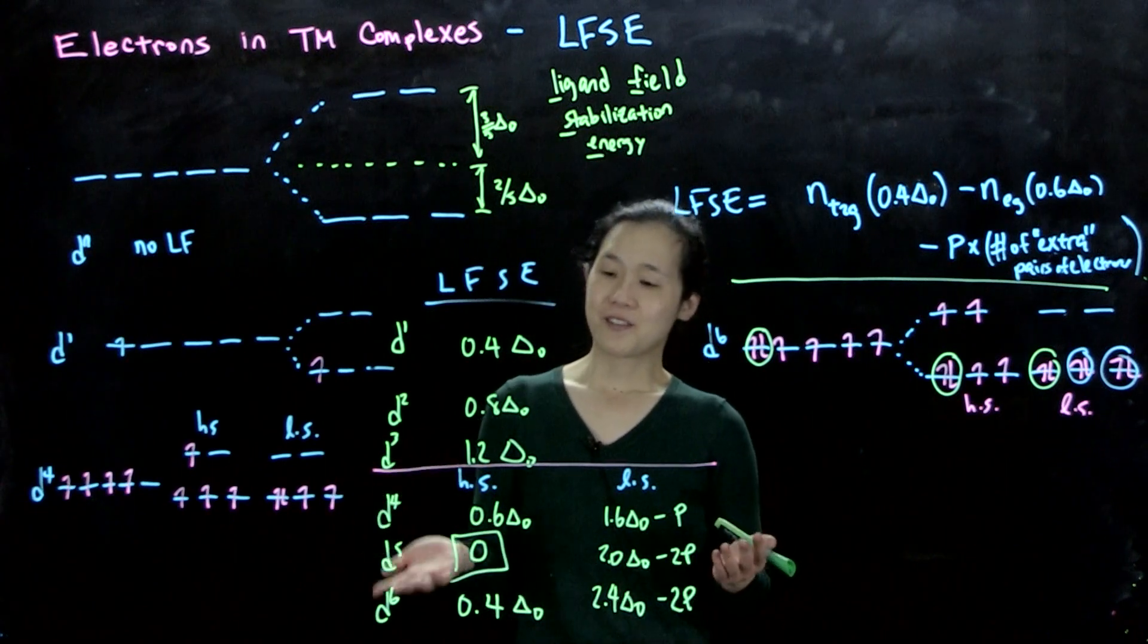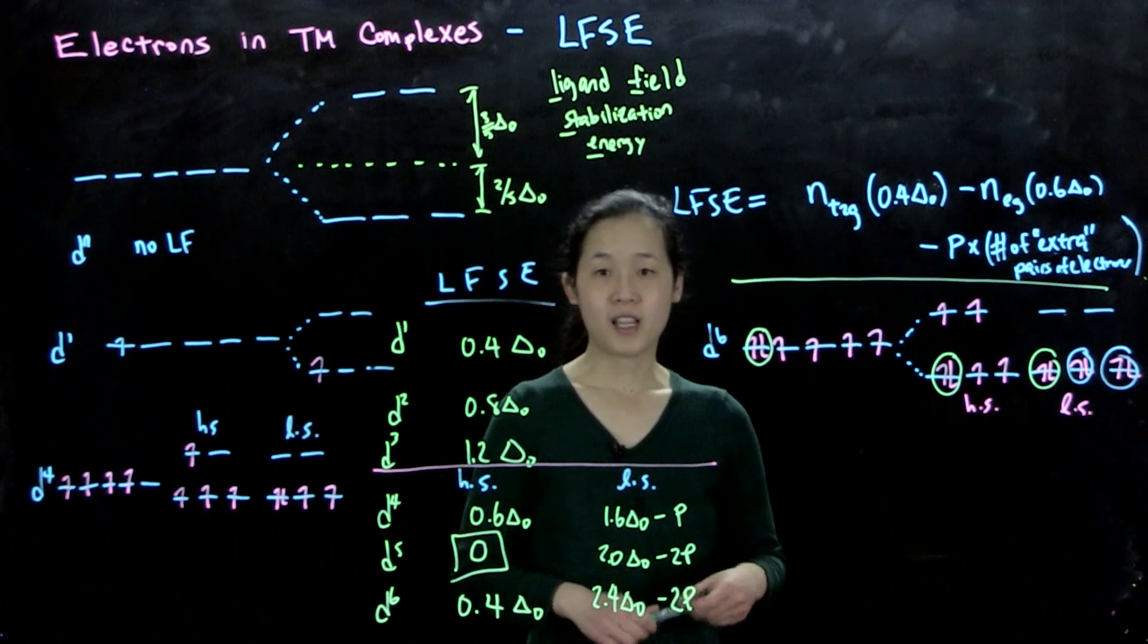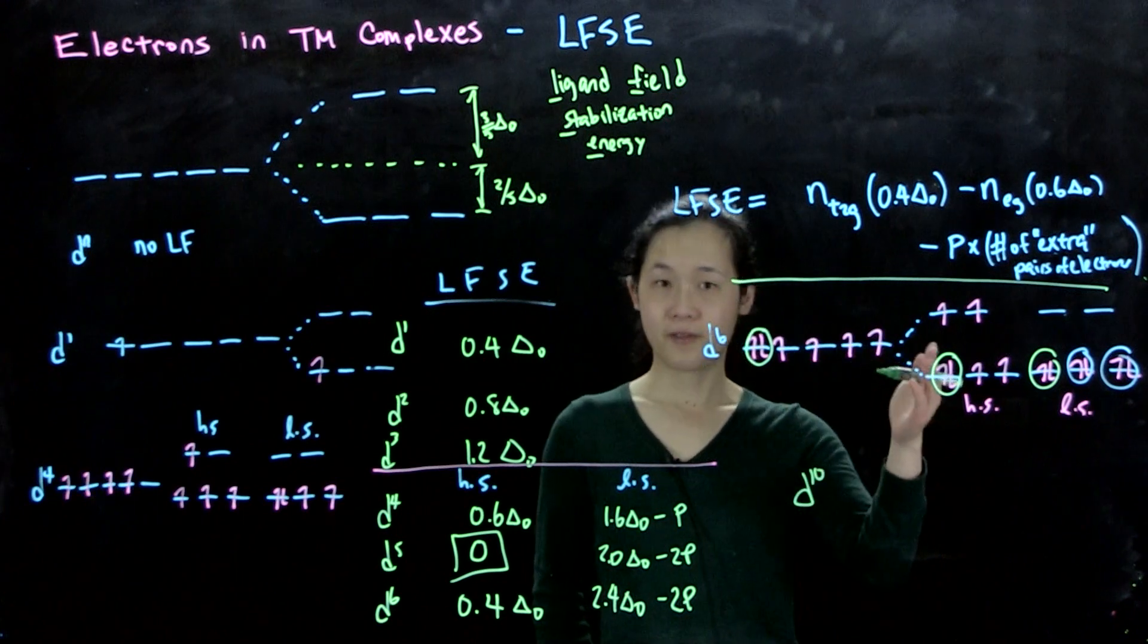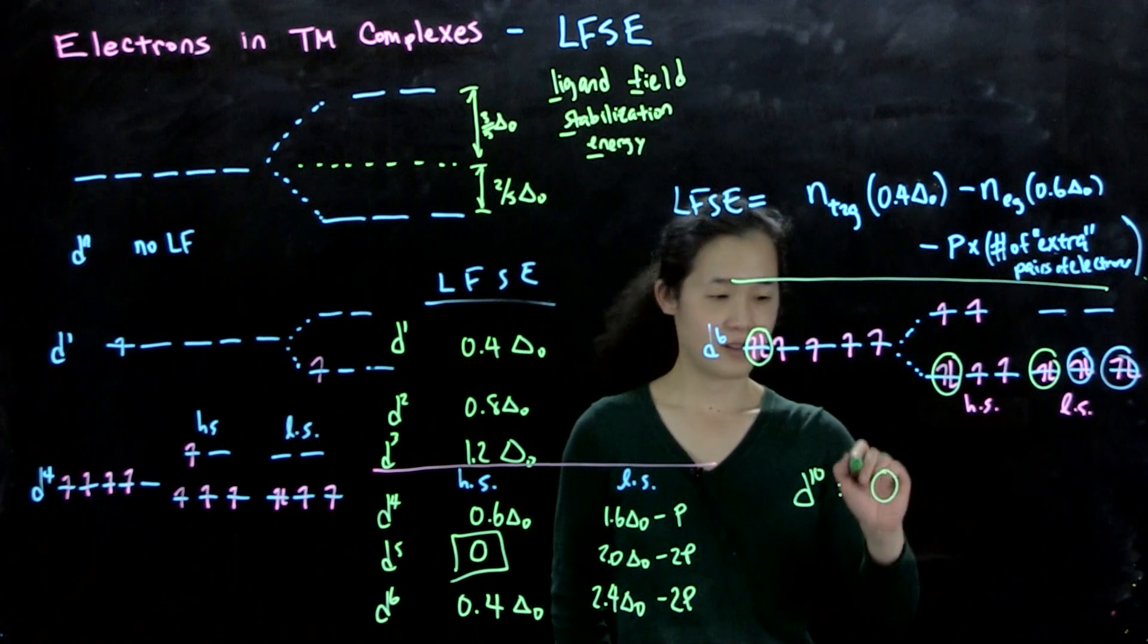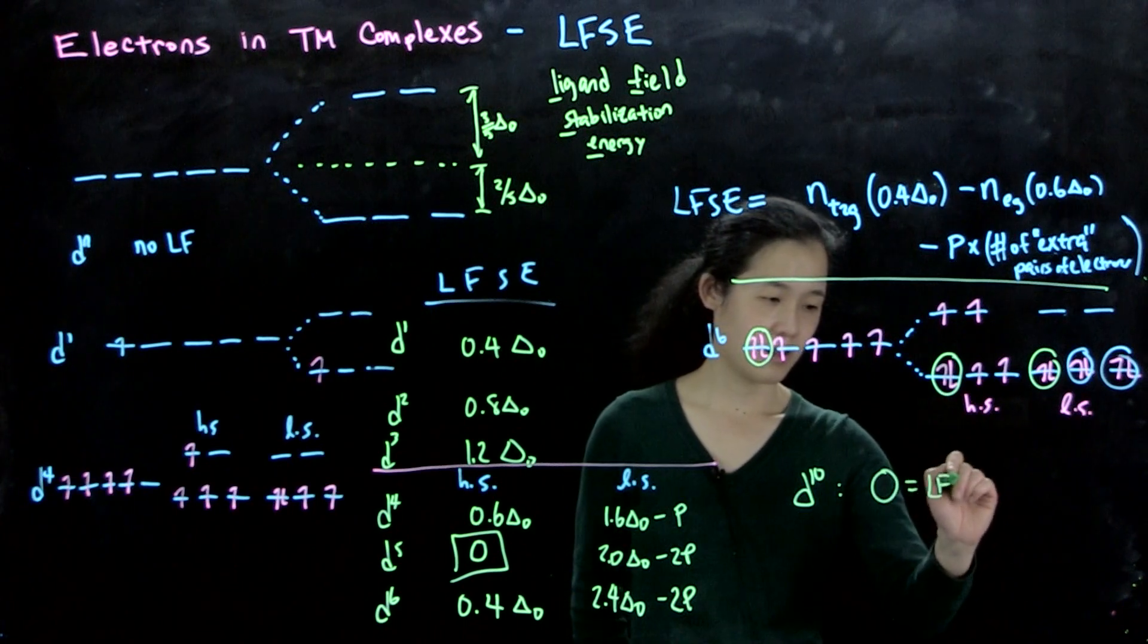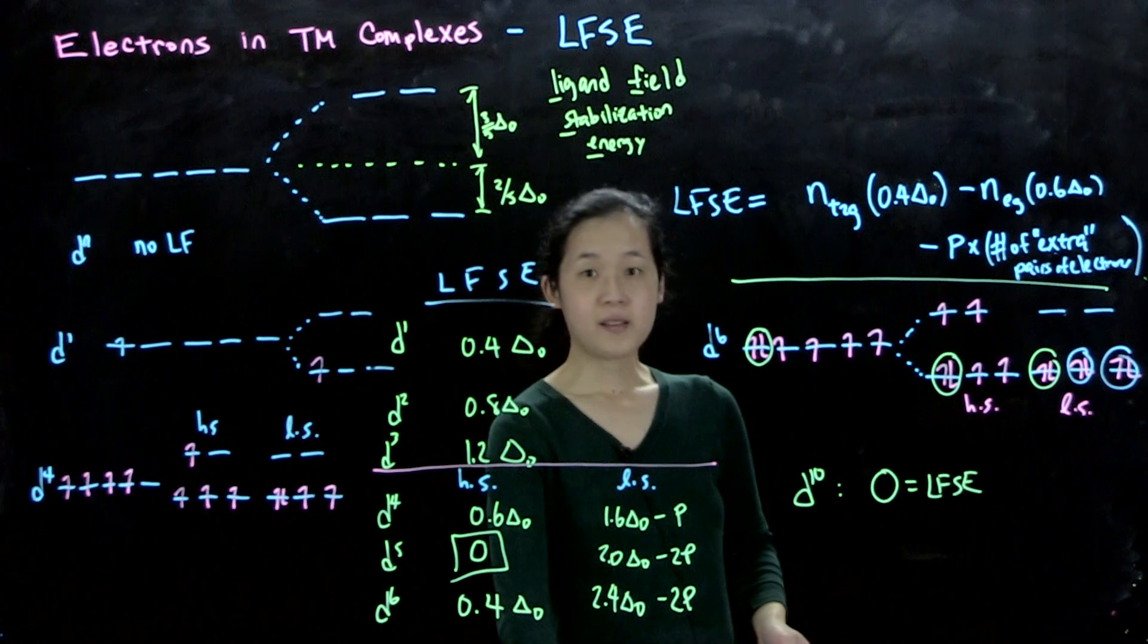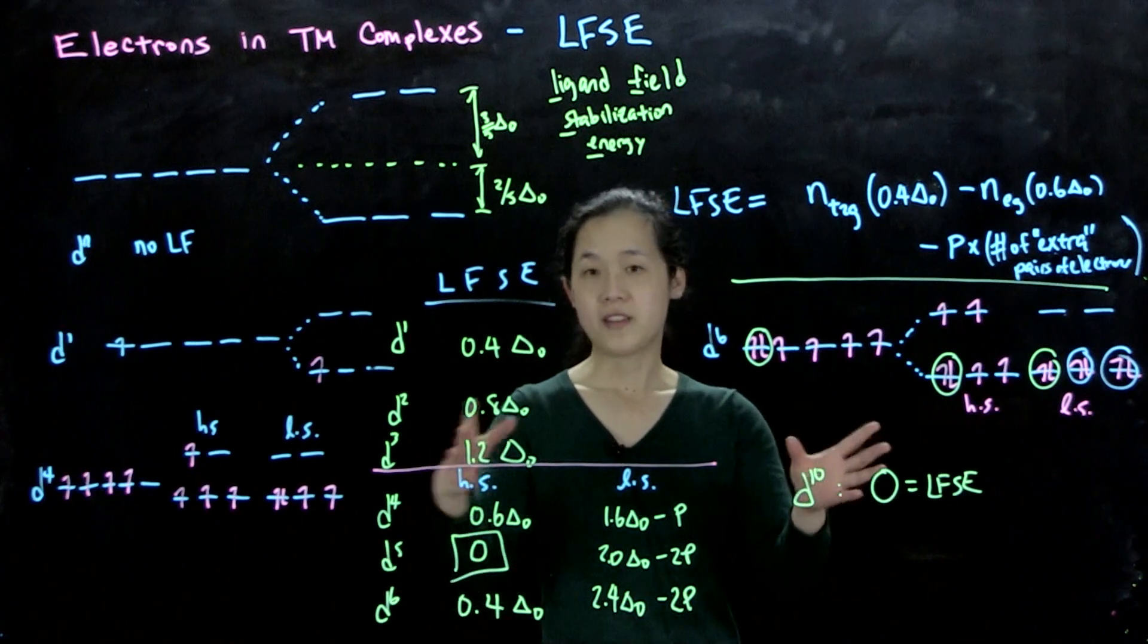I guess we'll do D7 through D9 in class. And then one last thing is D10, all orbitals are filled, so LFSE is 0. So this tells us about stabilization. I'll give you an example in class about why this is actually important.